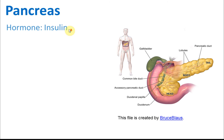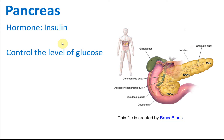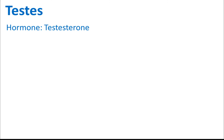The pancreas secretes insulin. Insulin is the hormone that controls the levels of blood sugar or glucose, so that you do not have too much or too little sugar in your bloodstream.